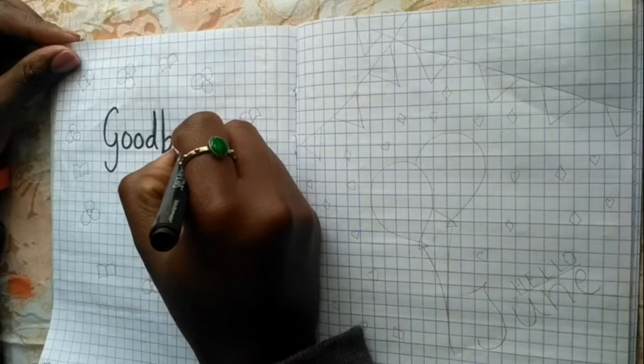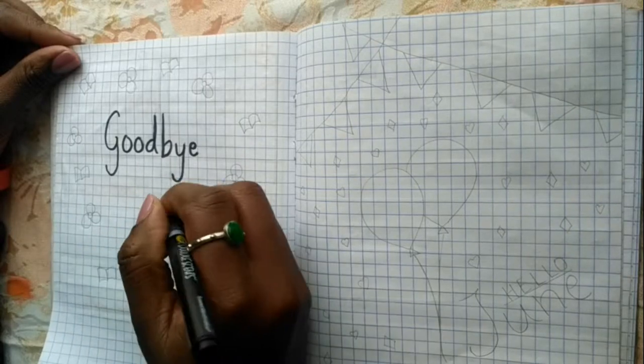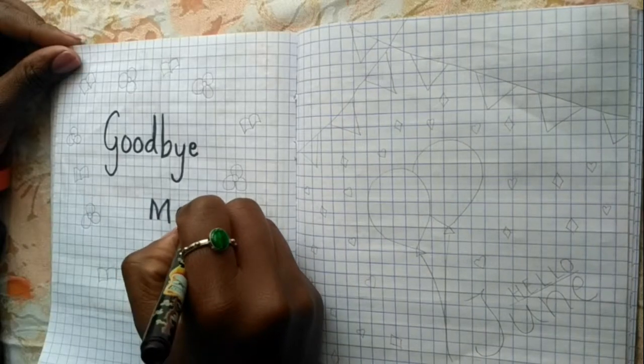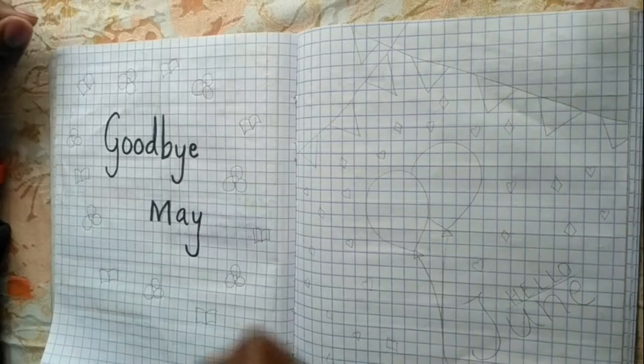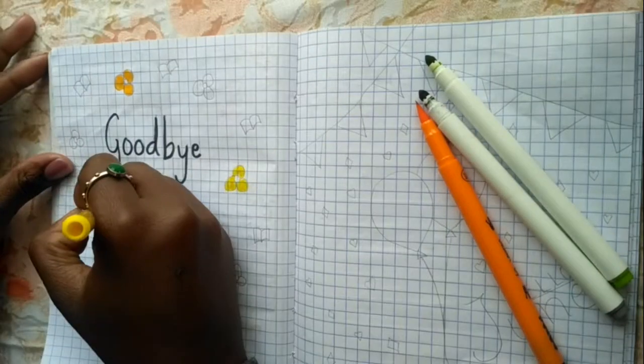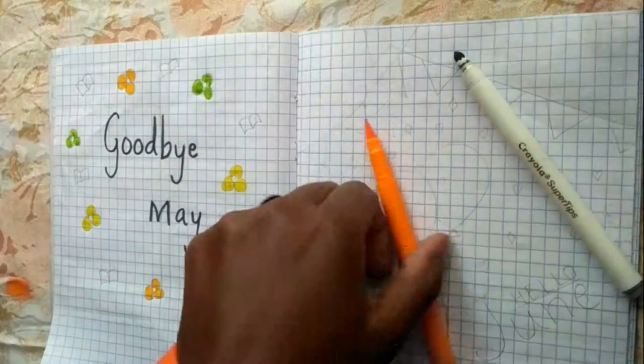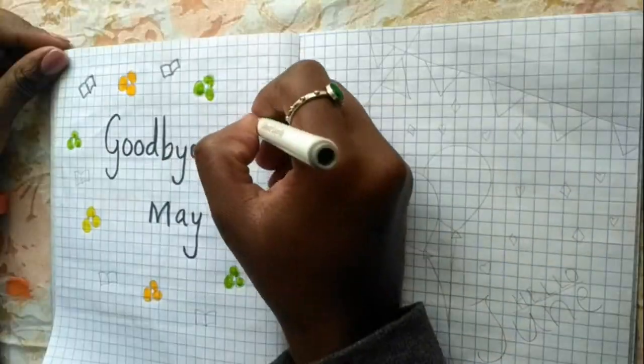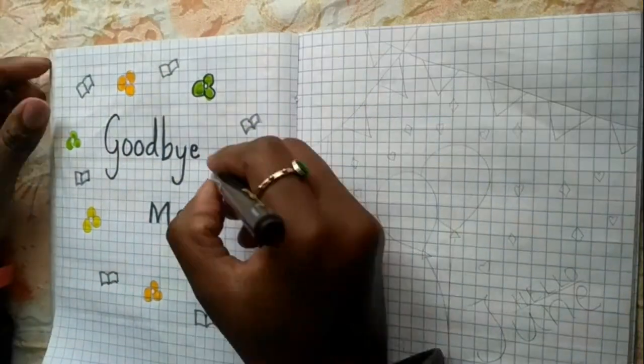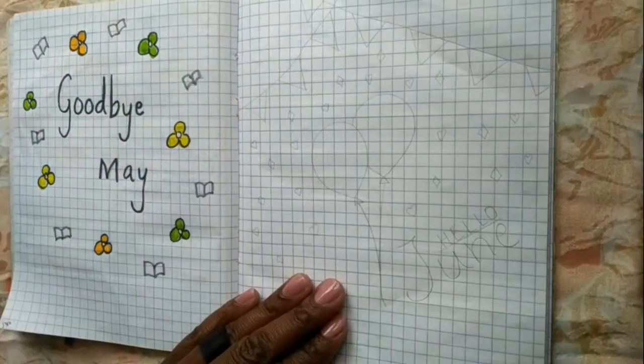So I start off by saying goodbye to May, and I'm doing this by just lettering goodbye May and incorporating my May theme. Though I did not post it, I had a May theme of going back to school, so I have there some flowers and some random books flying around, and I thought it was a good combo. That's what I have over there, and it is my first page of June.